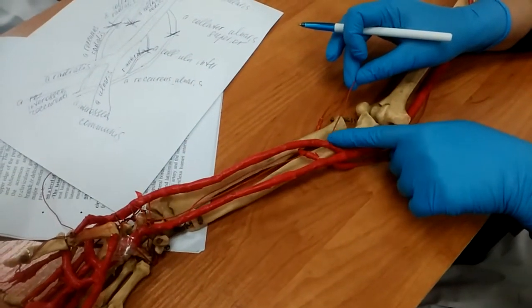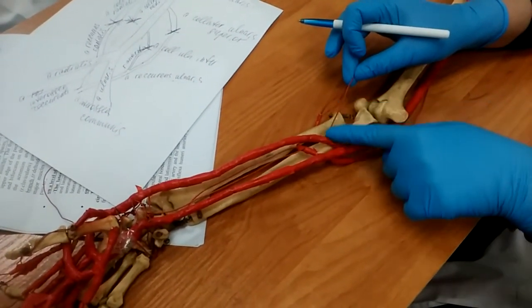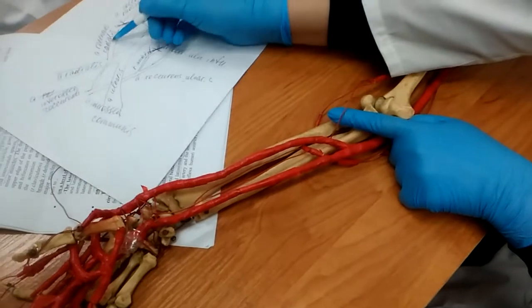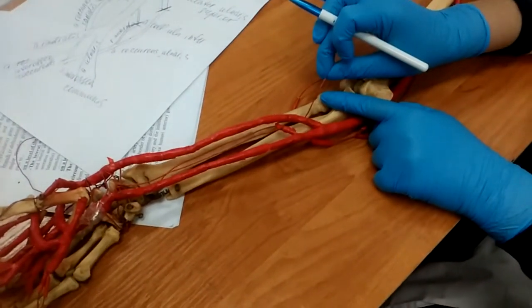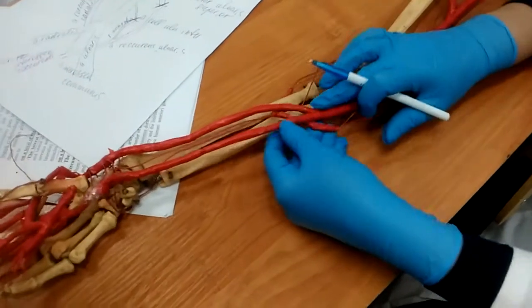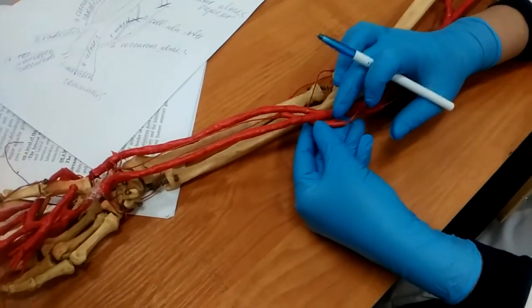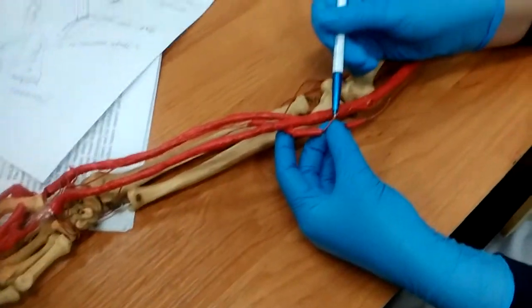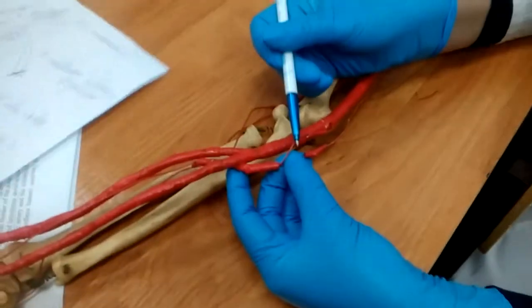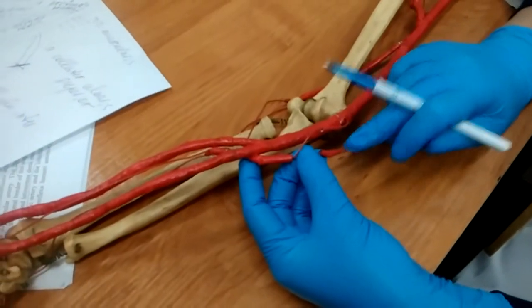Anastomosis with what? This is the arteria recurrence radialis—one anastomosis. Then the arteria ulnaris has the arteria recurrence ulnaris, which consists of anterior ramos and posterior ramos.